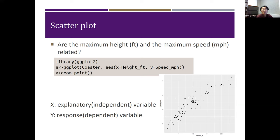To visually investigate the relationship between the maximum height and the maximum speed of the roller coaster, we first draw a scatter plot using ggplot command. X is notation we typically use for explanatory or independent variable, and Y is for response or dependent variable. Often, we are interested in if Y depends on X.